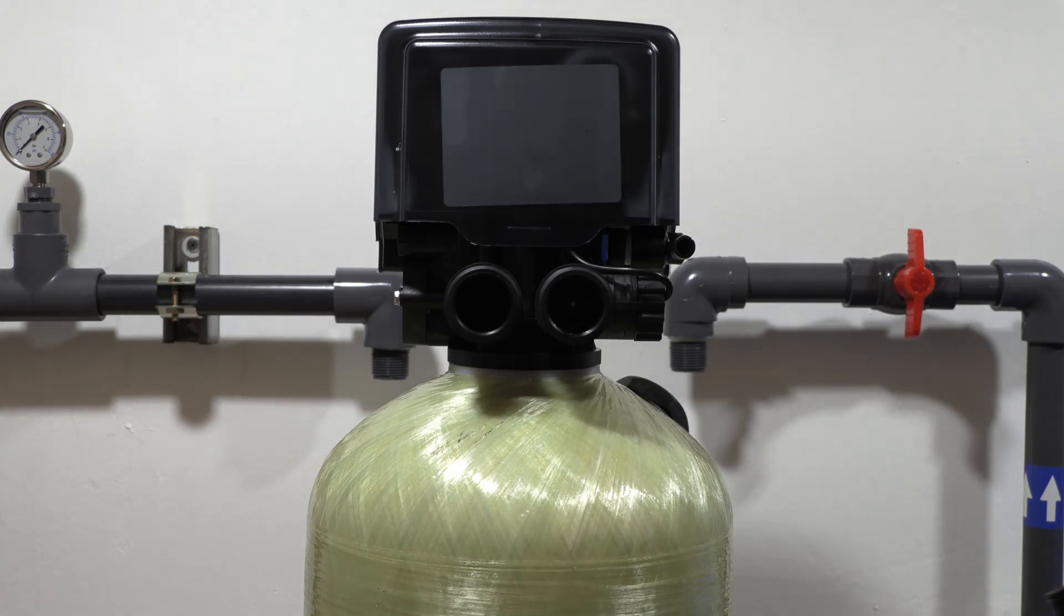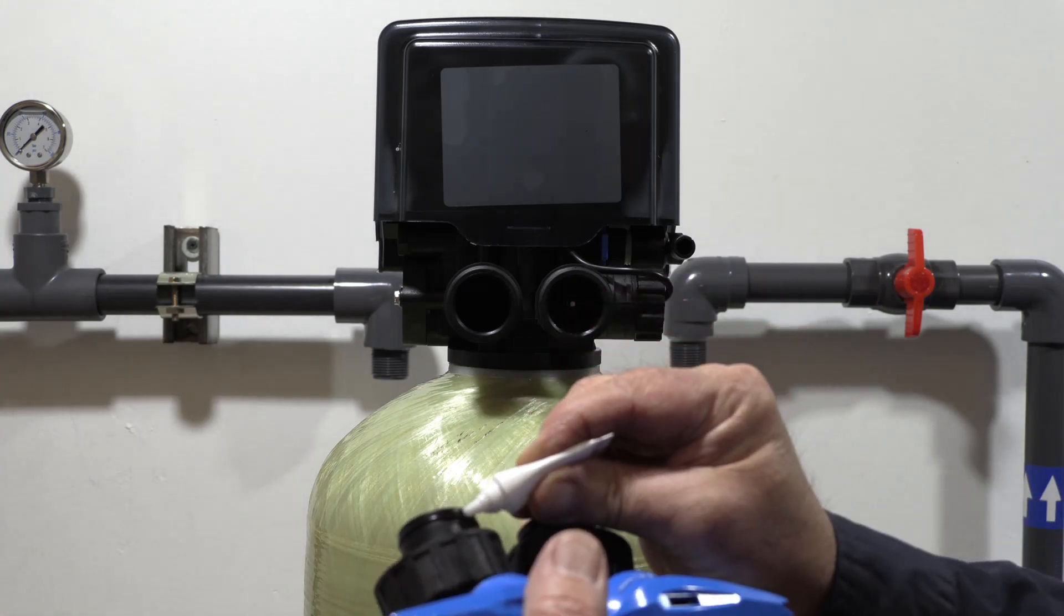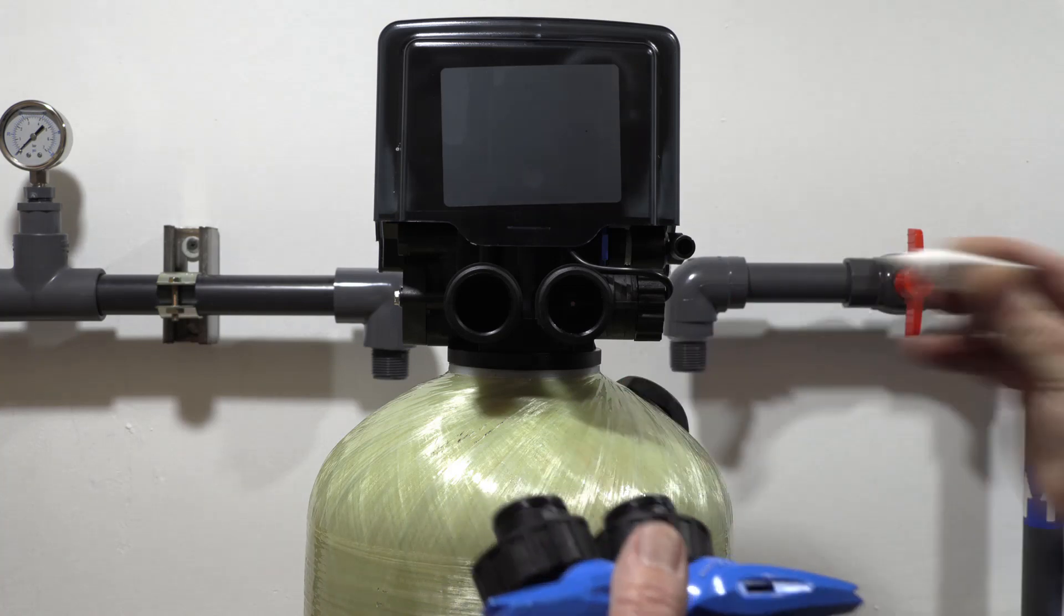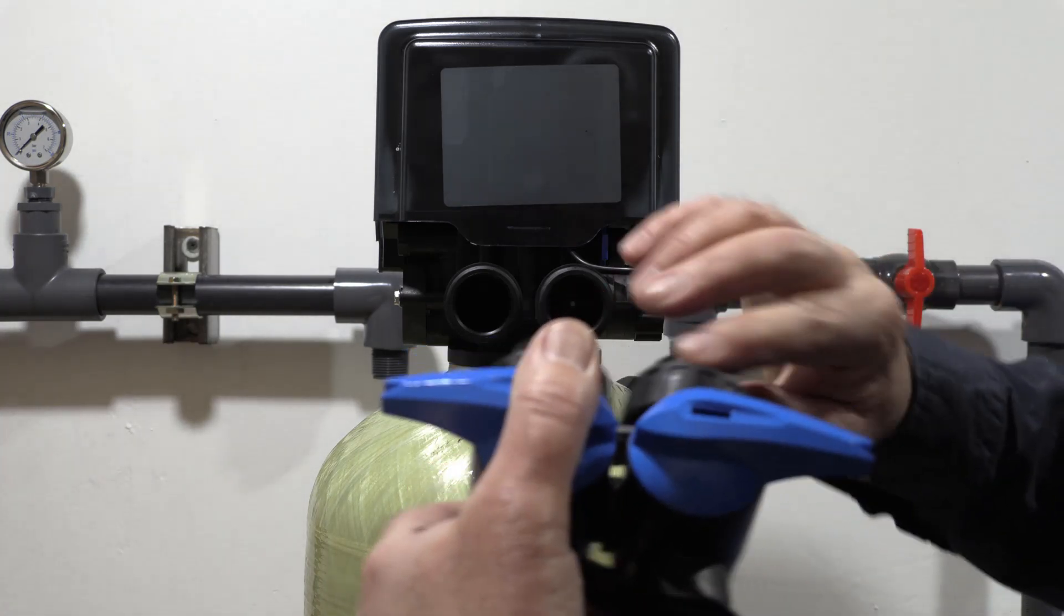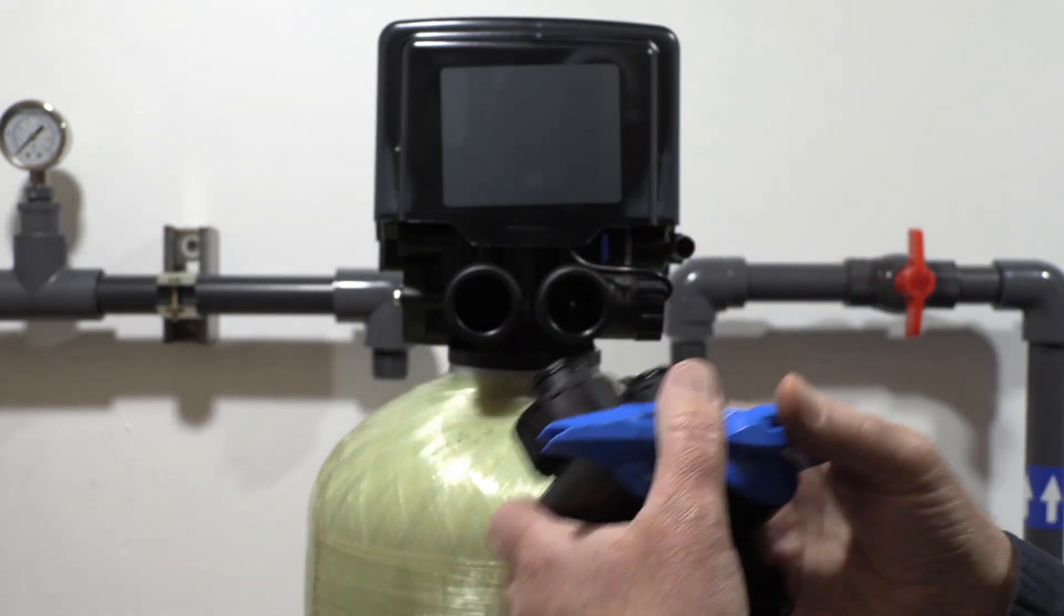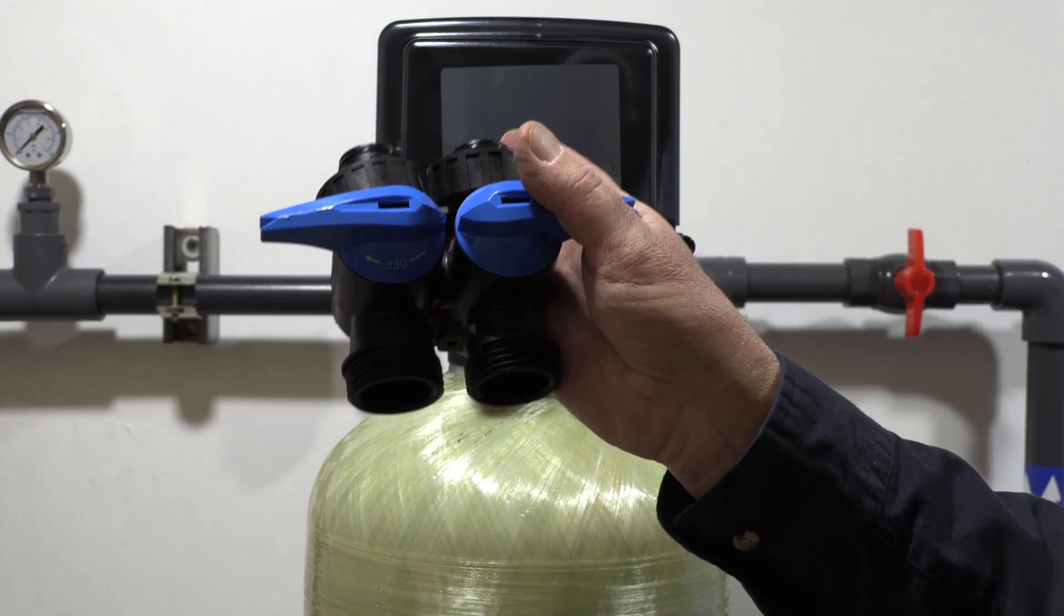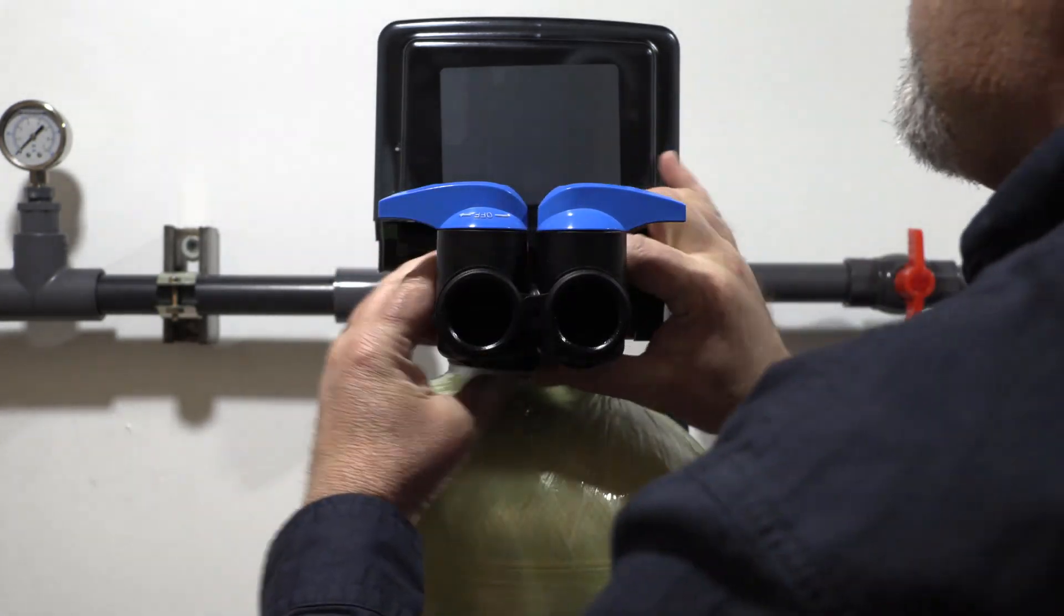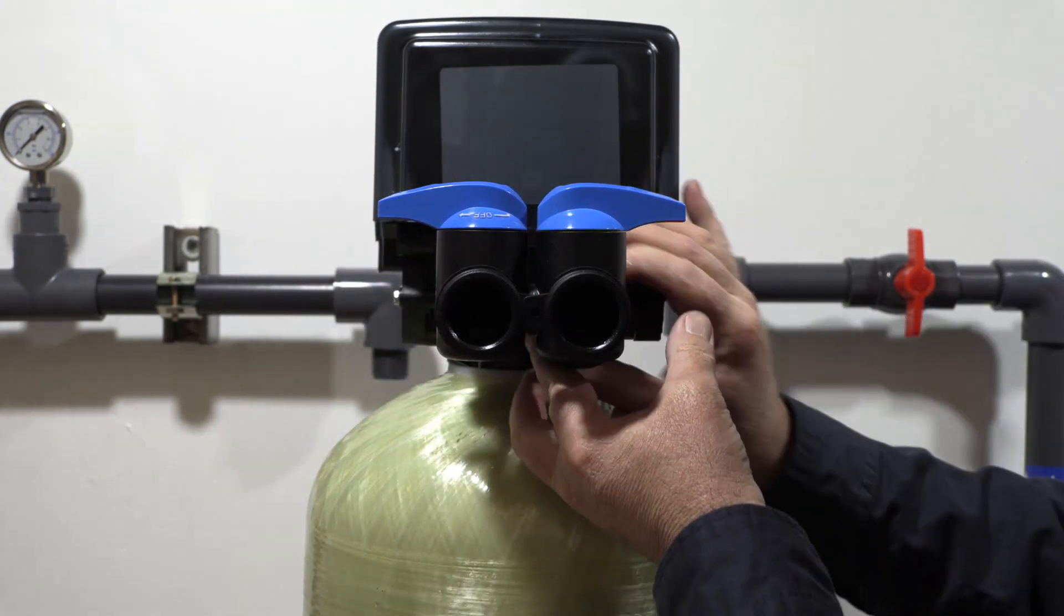Okay, now we're going to install our bypass valve. Again, there are two O-rings on each of the entrances here. You want to lube those guys up. And notice there are in and out arrows on that valve head and also here on the bypass valve. These guys just pop in. And you just hand tighten these as well.